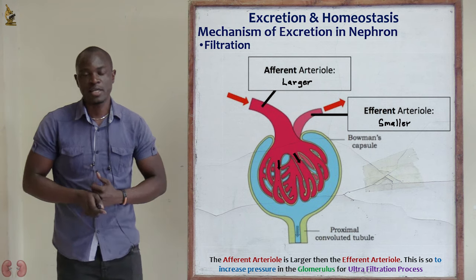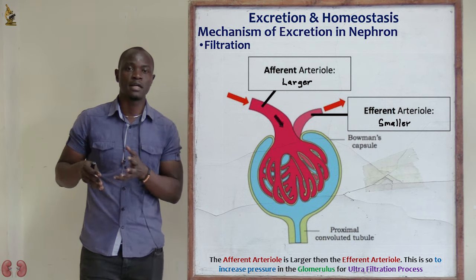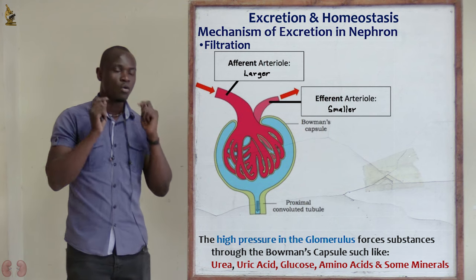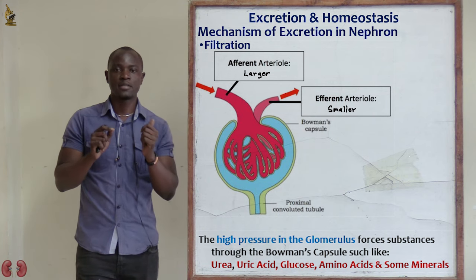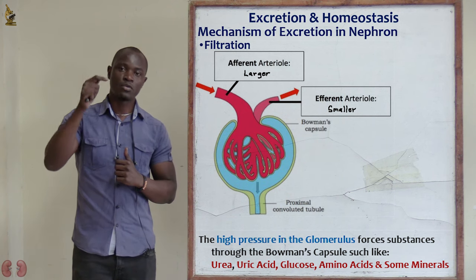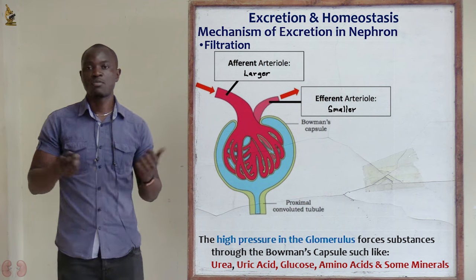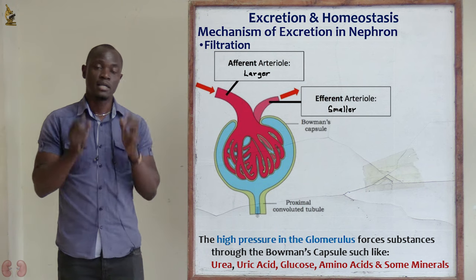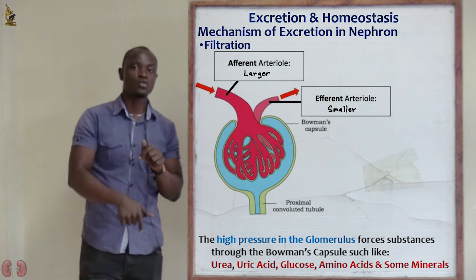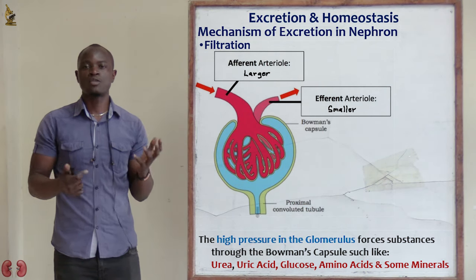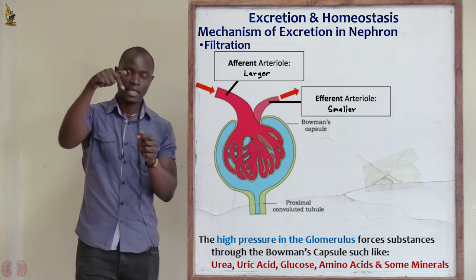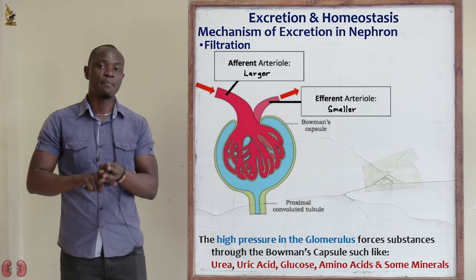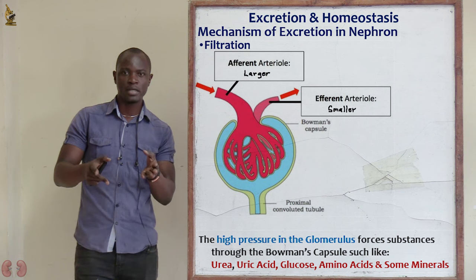Due to this, a very high pressure gradient is created in the glomerulus. This high pressure gradient is going to force water, some mineral ions, and urea to pass through the glomerulus and into the Bowman's capsule. Some of these substances include urea, uric acid, glucose, mineral salts, some amino acids, and also water molecules — they are forced from the glomerulus and into the Bowman's capsule.